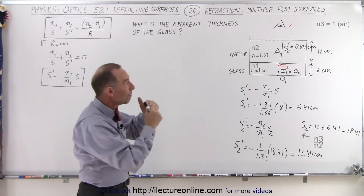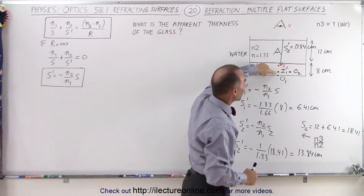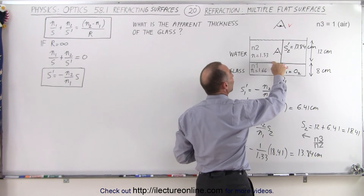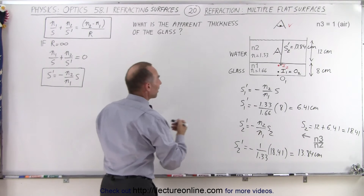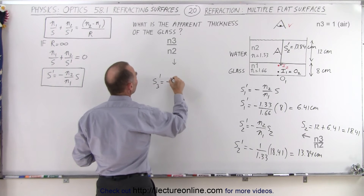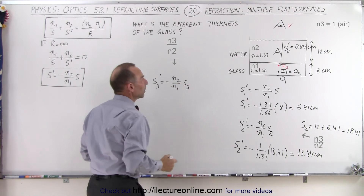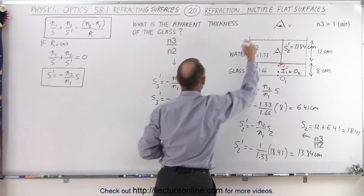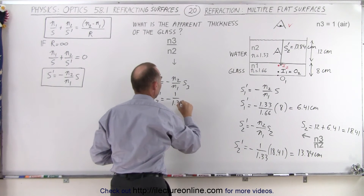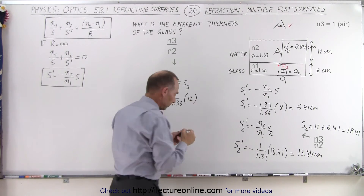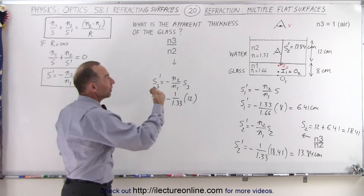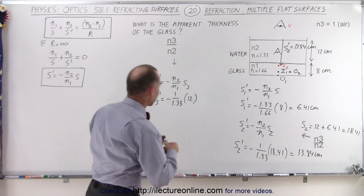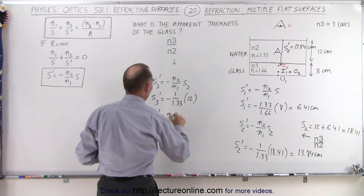Now step three: we find where the top of the glass appears to be relative to the observer above. S3' = -(N2/N1) × S3. N2 is 1 (air), N1 is 1.33 (water), and S3 is 12 centimeters — the water thickness. So S3' = 12 divided by 1.33, which equals 9.02 centimeters. So S3 prime equals 9.02 centimeters.